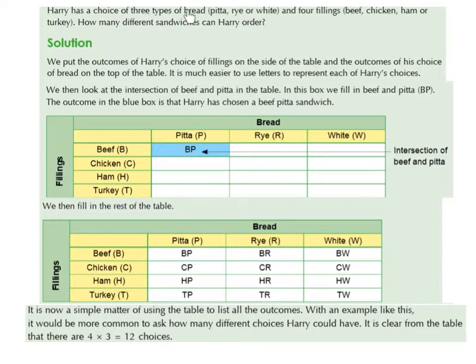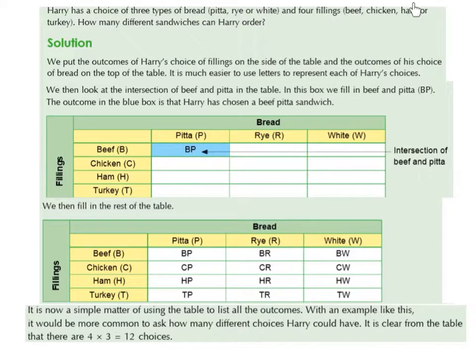Harry has a choice of three types of bread: pitta, rye, or white, and four fillings: beef, chicken, ham, or turkey. How many different sandwiches can Harry order?